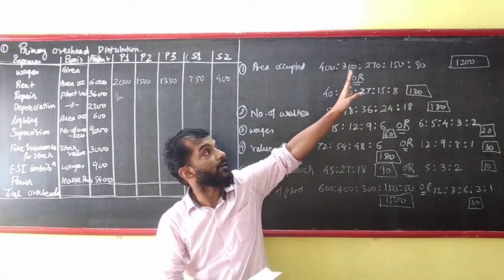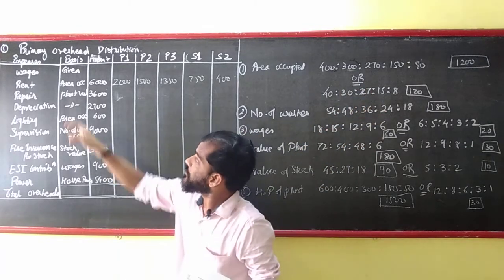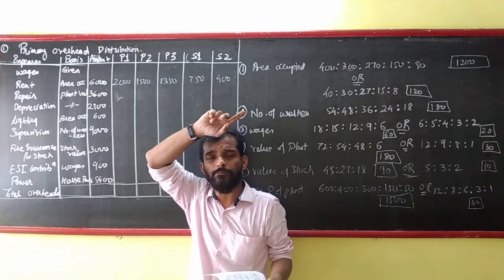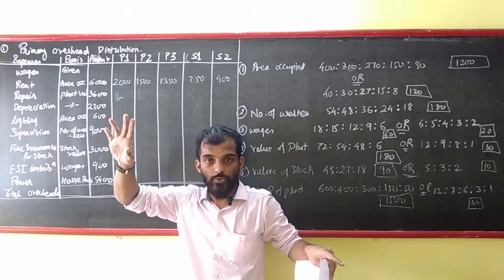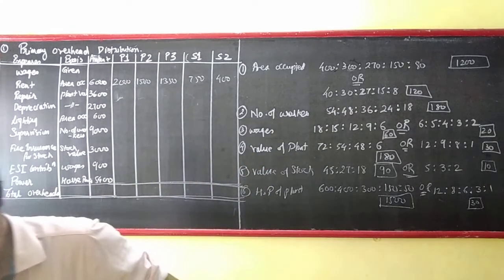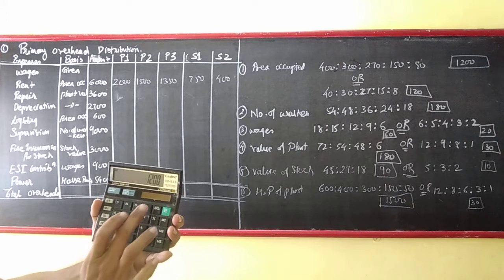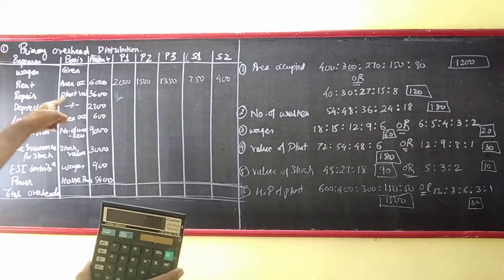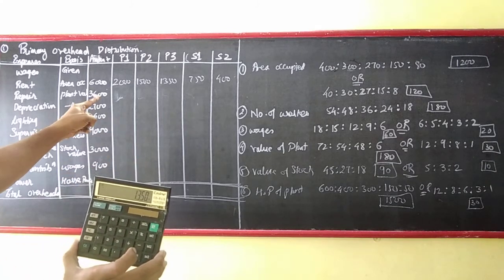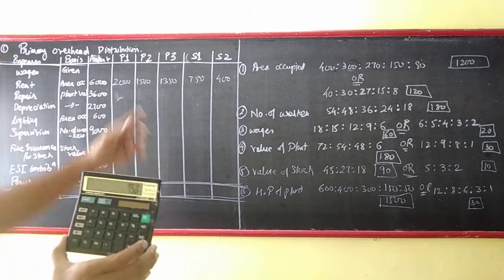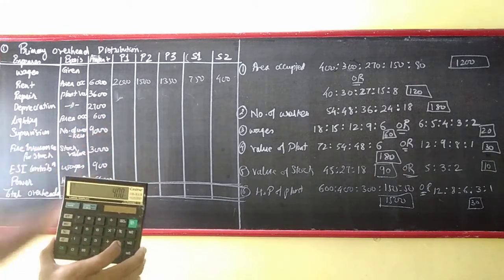Area in square feet: 400, 300, 270, 158. Total is 1,200. So 6000 divided by 1200, that is 5. 5 into 400, that is 2000. Into 300 is equal to 1500, 270 is equal to 1350 for P3, 150 is equal to 750 for S1, 80 is equal to 400. I hope it's clear.